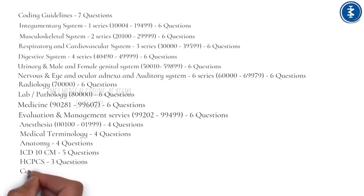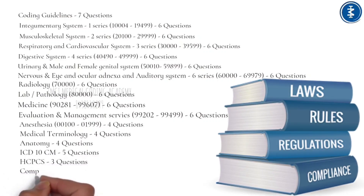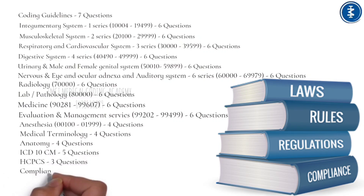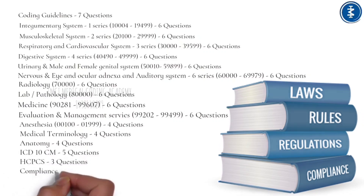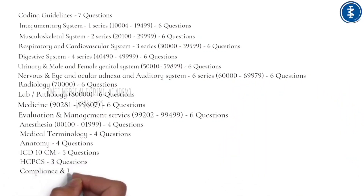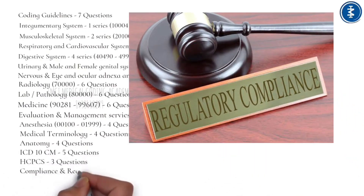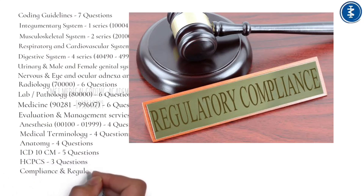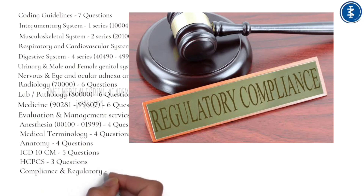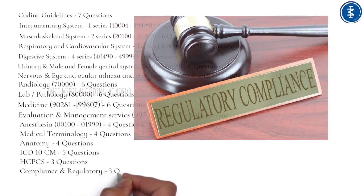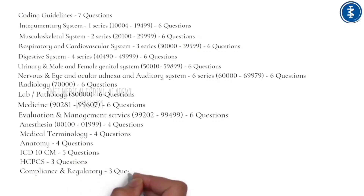The Compliance and Regulatory section has 3 questions. It covers regulatory compliance, which is an organization's adherence to laws, regulations, guidelines, and specifications relevant to its business processes. Violations often result in legal punishment, including federal fines.